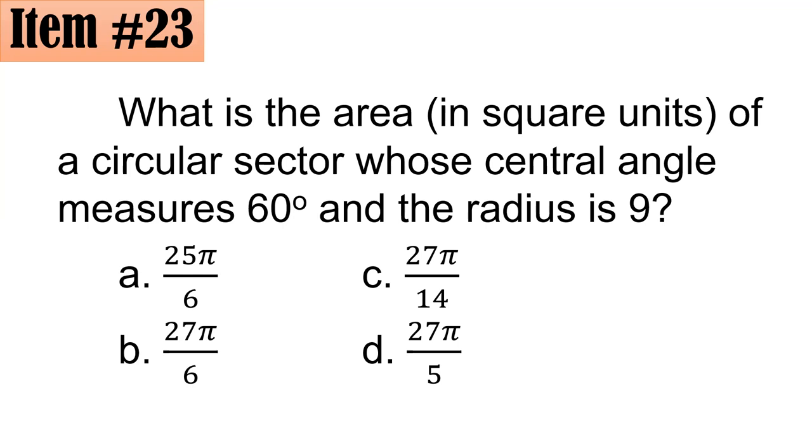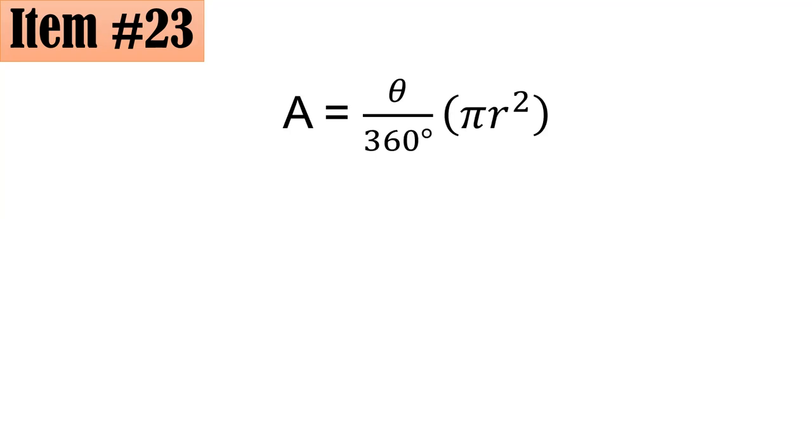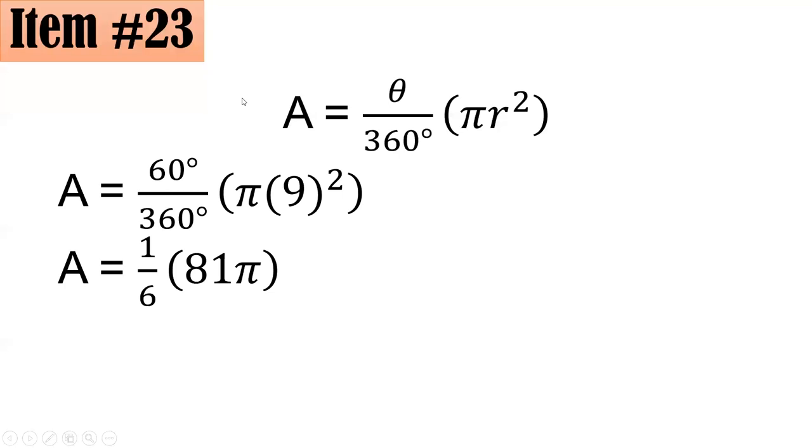This is the formula for the area of a sector of a circle: A is equal to theta all over 360 degrees times pi r squared, where theta is the measure of the central angle in degrees and r is the length of the radius. By substitution, A equals 60 degrees over 360 degrees times pi times 9 squared. The 60 over 360 simplifies to 1 sixth. 9 squared is 81 times pi. You could see that 81 and 6 have a GCF of 3. Dividing each by 3 and simplifying everything gives us 27 pi all over 2 square units. It's not found among the choices, so it has to be letter E.